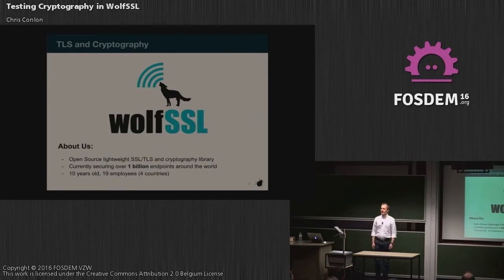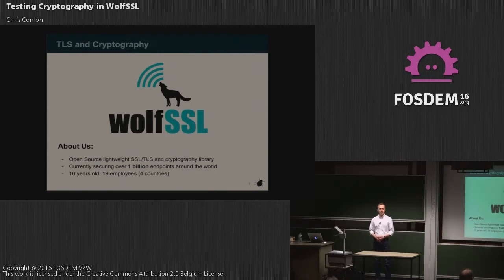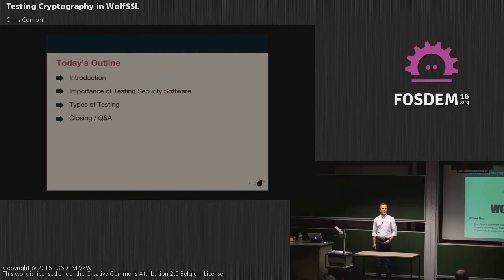So how many of you have heard about WolfSSL or know what we do? About a third of you, probably. We make an SSL, TLS, and crypto implementation — written from scratch, from the ground up, in C. It's roughly 10 years old now. It supports up to TLS 1.2, DTLS 1.2. It's very optimized, with low resource use. The full footprint size is about 60 kilobytes. It works well in embedded environments all the way up to large-scale server environments. We currently have 19 people and are growing every year. We're based in four countries — headquarters in Seattle, Washington, with people in Montana, Portland, California, Tokyo, Brazil, and a contractor in France.